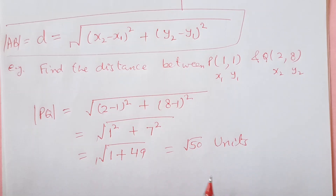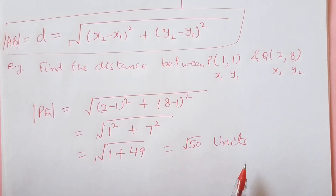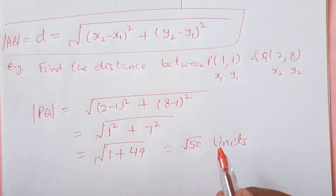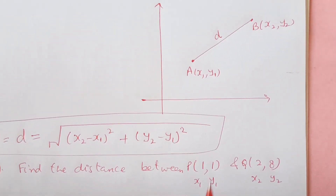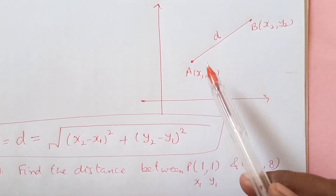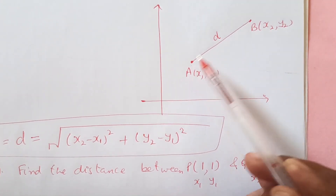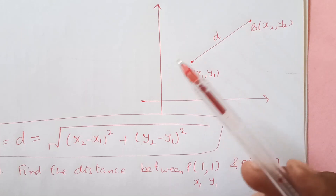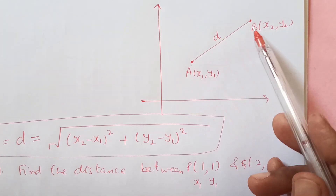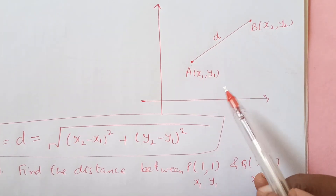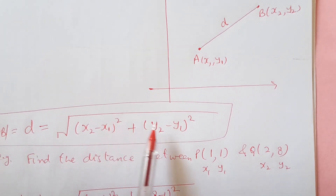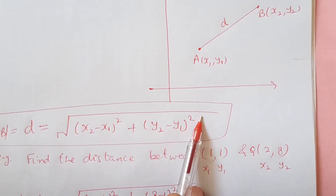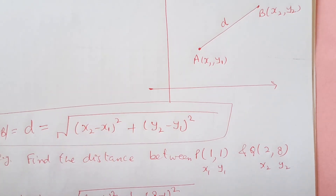The unit may be anything — if you are given a unit, otherwise we can just write units. If it is meters, centimeters, or something given according to the question, we put that unit. So to repeat: the distance formula is used to find the distance from point A to point B. We take the difference of the x-coordinates and square it, take the difference of the y-coordinates and square it, then take the square root of the whole thing.